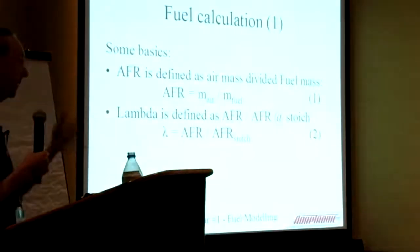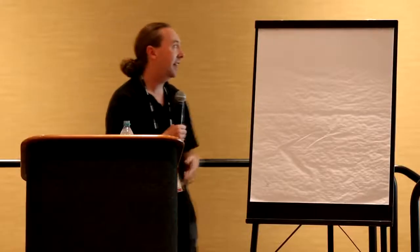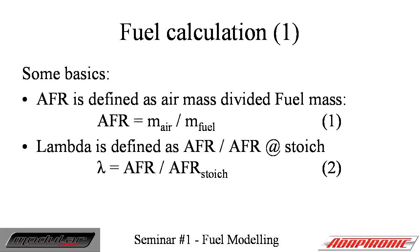What we want to work out is how much fuel do we need to inject — that's really the ECU's job. We can work that out from knowing how much air is going into the engine and the air-fuel ratio we want to achieve. Air-fuel ratio comes from a target lambda. If you change your fuel chemistry, generally your target lambda is still going to be pretty much the same, but the air-fuel ratio will be different. The top equation is that air-fuel ratio equals mass of air divided by mass of fuel — just a definition. Lambda is air-fuel ratio divided by the stoichiometric air-fuel ratio — again, just a definition.